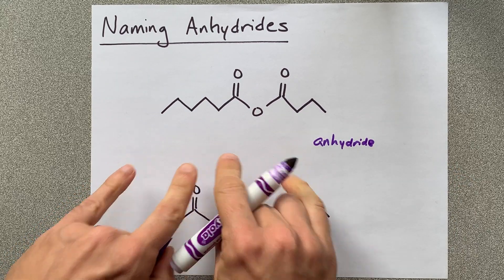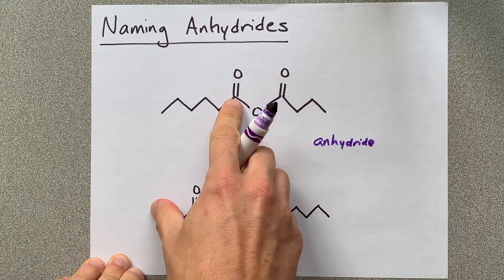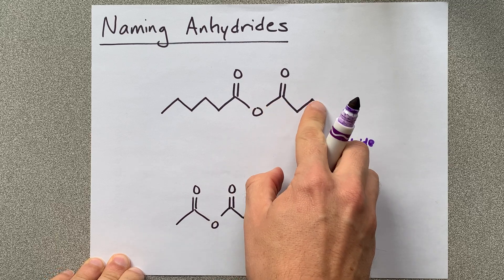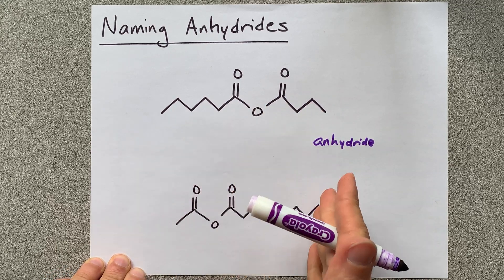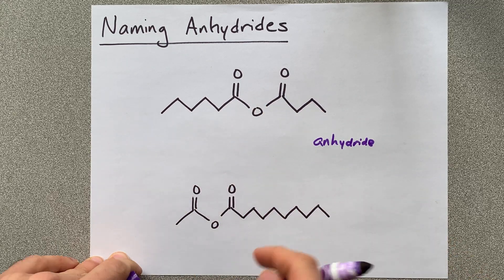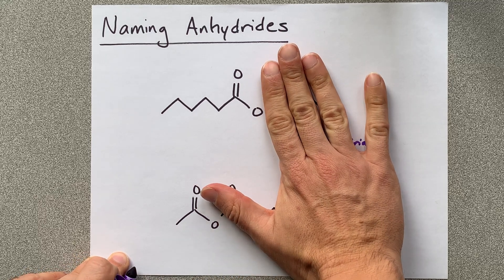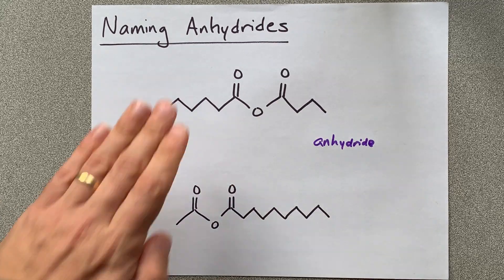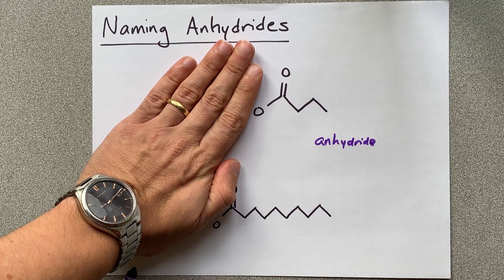The two first words are going to come from the lengths of each of the carbon chains with OIC endings, like they were carboxylic acids. In fact, that kind of looks like it could be related to a carboxylic acid, and that one does as well.